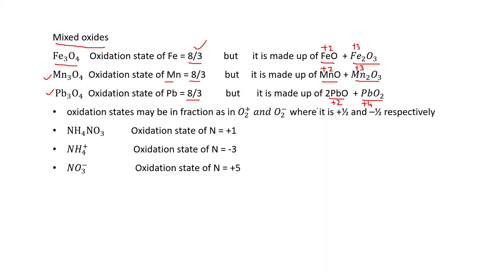However, there are certain species in which a fractional oxidation state genuinely exists. In O₂⁺, the oxidation number of each oxygen atom is +½; in O₂⁻, the oxidation number of each oxygen atom is −½. These are true fractional oxidation states, not averages.